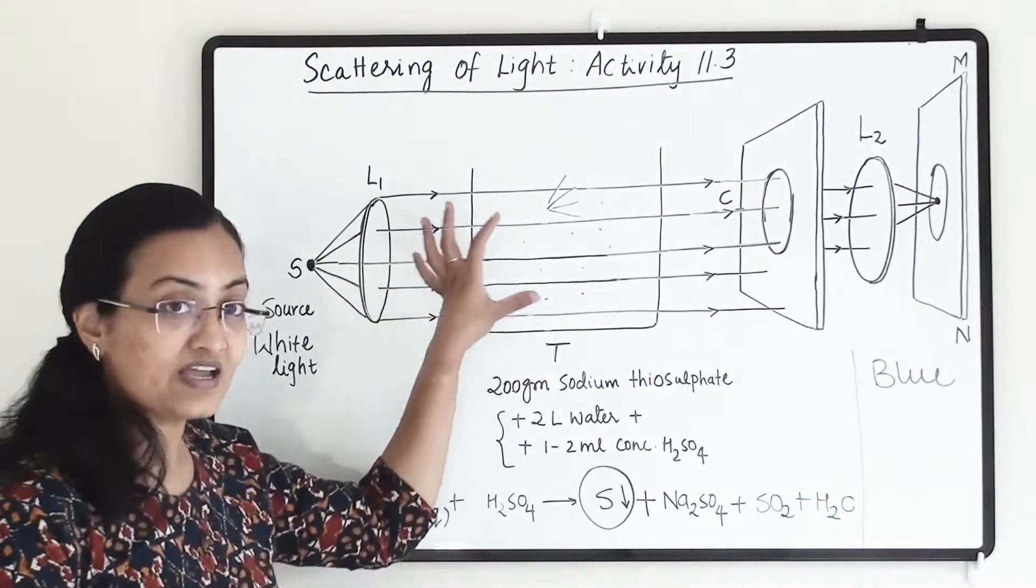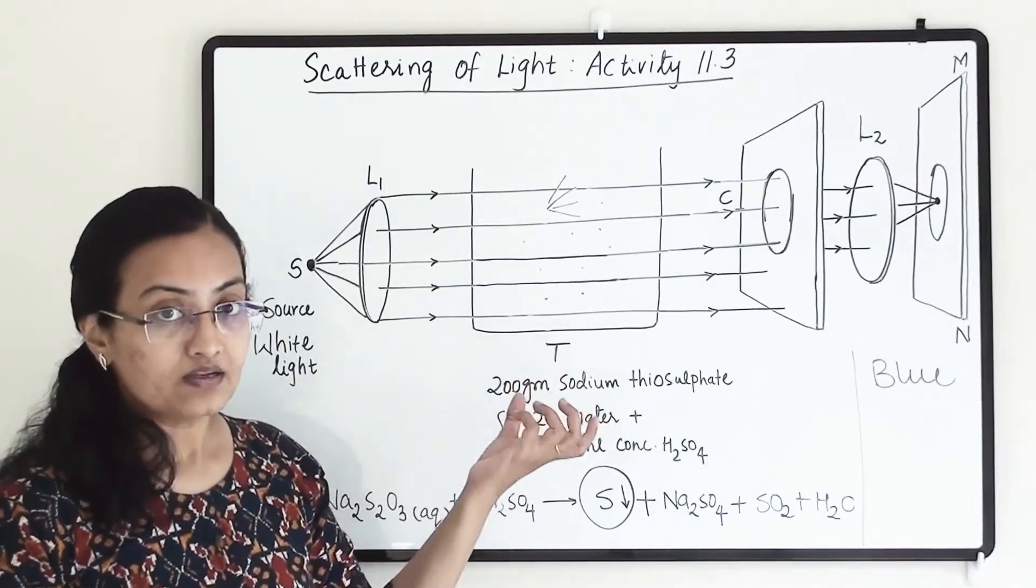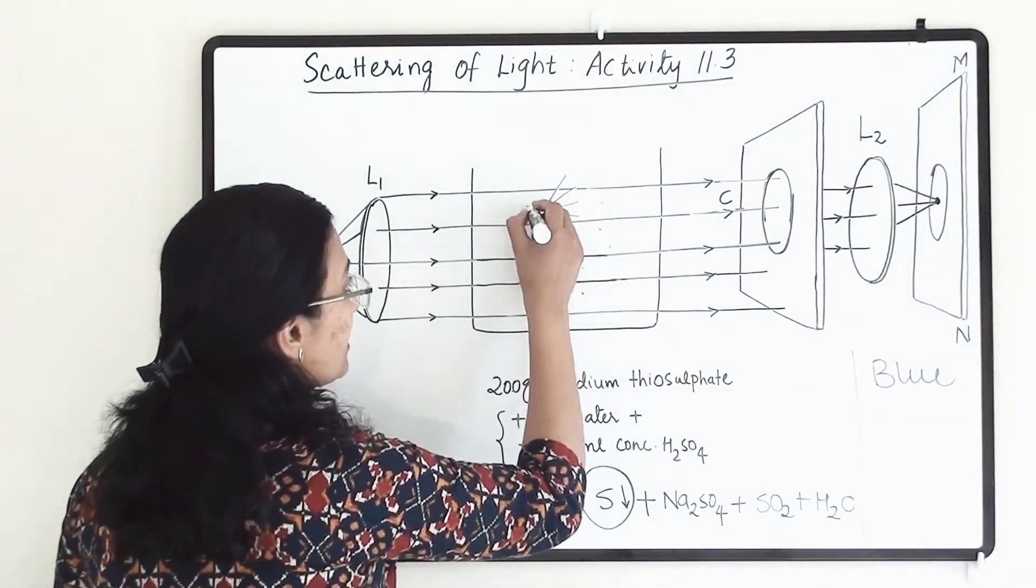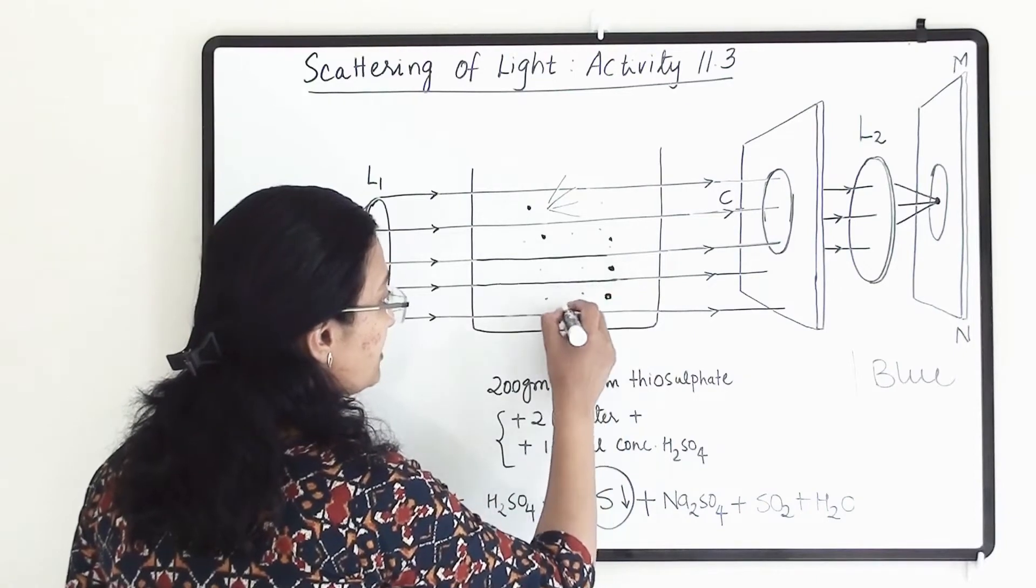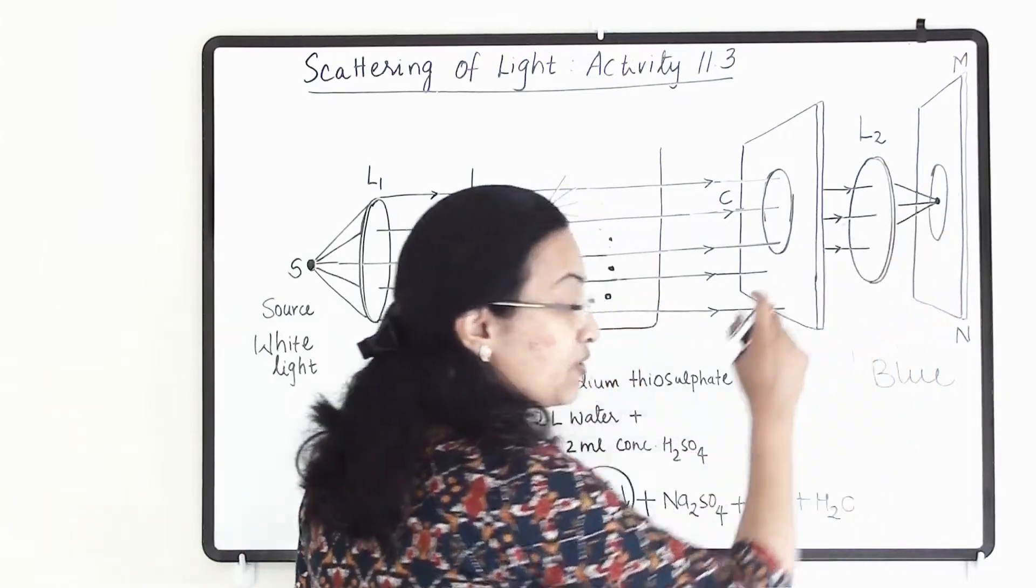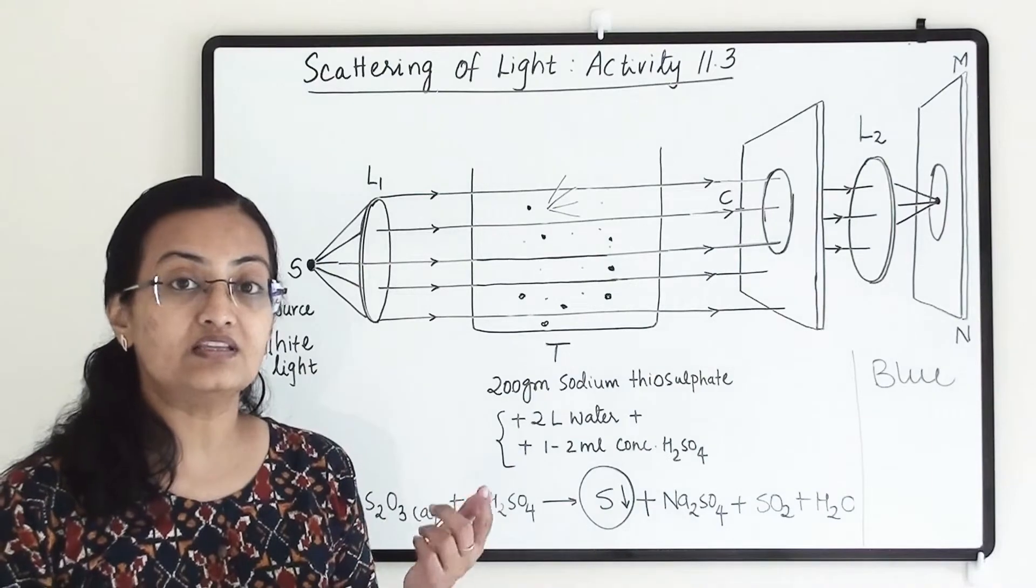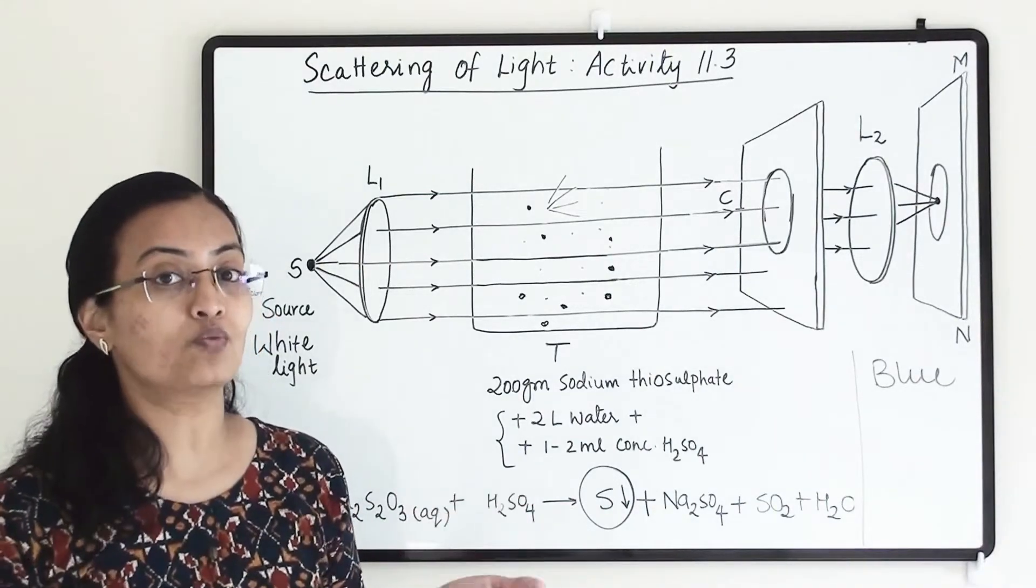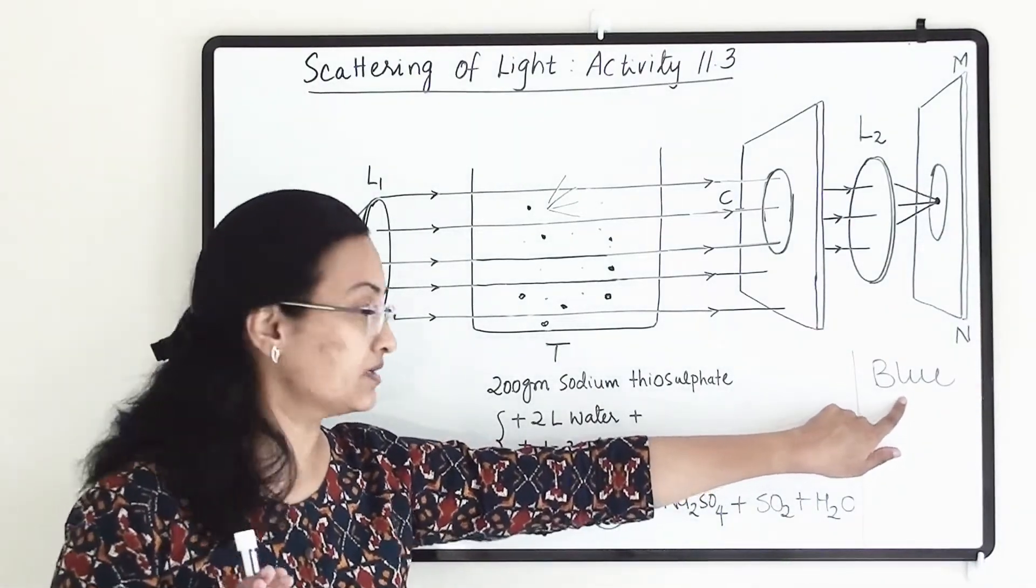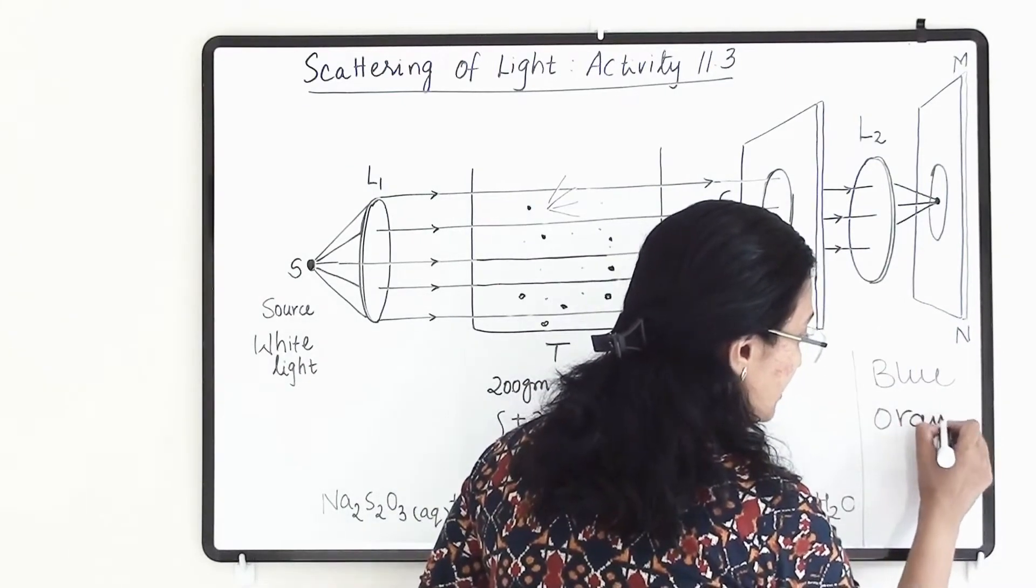After that as this reaction will progress our particles will become bigger. It will become bulky. So the particle size will be growing continuously. So as this particle will grow here the color of the light will change because as the particle will grow and particle size will become bigger and bigger they will scatter light which has a longer wavelength. Blue color light or the violet light has a smaller wavelength. So after this, after some time we'll be able to see the orange color light.